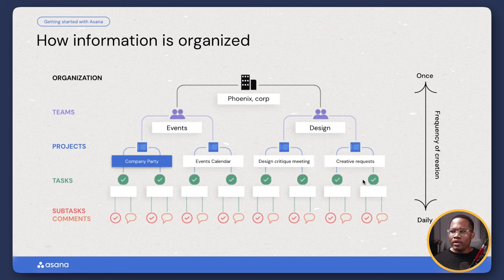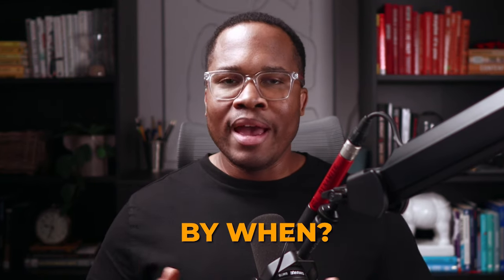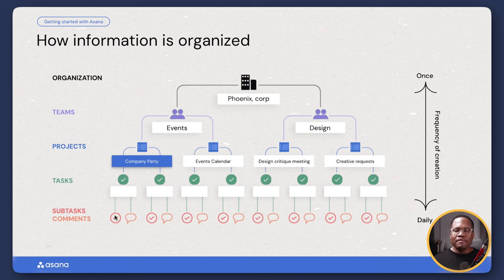Drilling down further, we have all of the tasks, subtasks, and comments. A task is something that needs to be actioned by you or someone else. For a task to be assigned properly, it needs to be assigned to an individual and it needs to have a due date. The third thing is a description of what you want them to carry out. The more description we can give, the better. We can always communicate through comments and various subtasks that relate to the parent task.